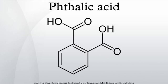Phthalic acid is an aromatic dicarboxylic acid with formula C6H4(CO2H)2. It is an isomer of isophthalic acid and terephthalic acid. Although phthalic acid is of modest commercial importance, the closely related derivative phthalic anhydride is a commodity chemical produced on a large scale.